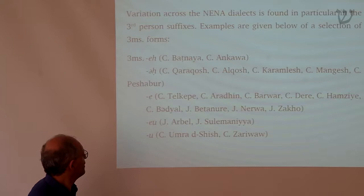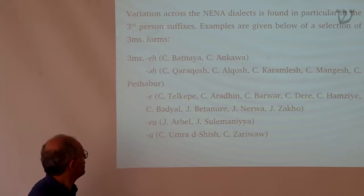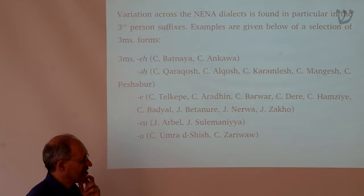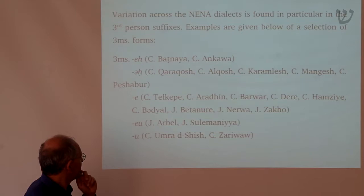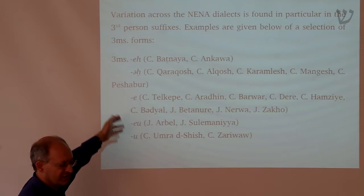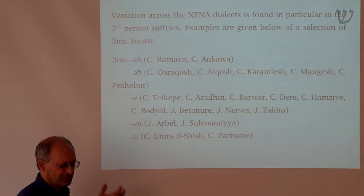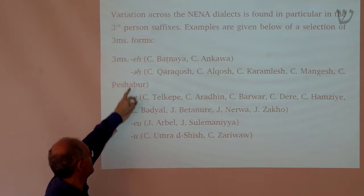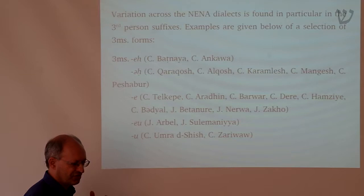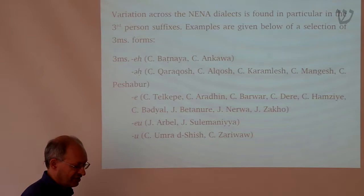So you say things like 'tore' — 'his ox'. Then you get a variety of different types of third person pronominal suffixes in other dialects: 'eh', 'eh', or 'ooh'. All of these can be explained by historical development. 'Eh' seems to have developed simply by dropping the H. 'Who' seems to have developed by some kind of addition, and 'who' seems to be a development from a possible contraction of 'eh-who'.